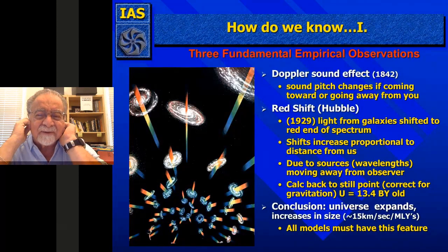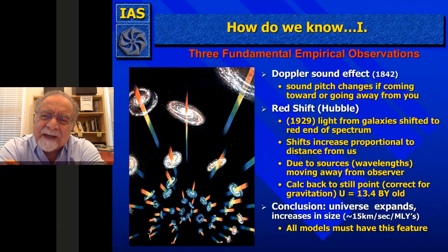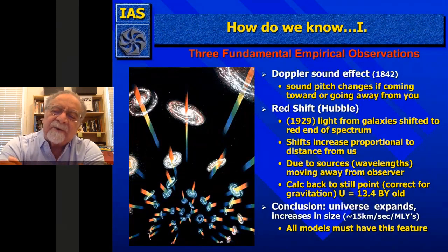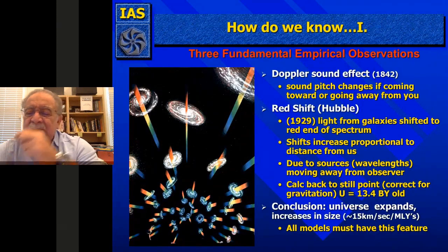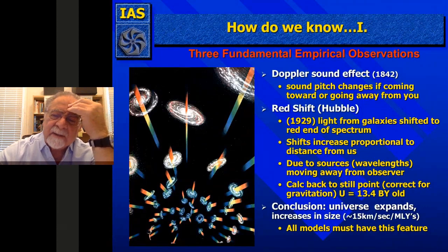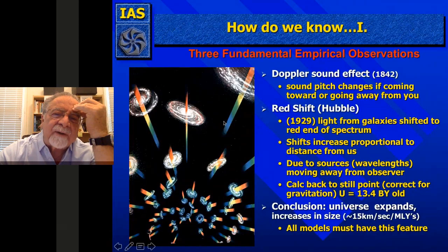Hubble transferred the Doppler sound effect to the redshift—light from the galaxies. He said the shifts were increasing proportional to the distance from us because they were traveling away from us. He calculated back to the still point and corrected for gravitation. The light we're receiving now is 13.4 billion years old. This became the Hubble constant: 15 kilometers per second per million light years of traveling away from us. So the redshift showed all things were traveling away from us as a source.